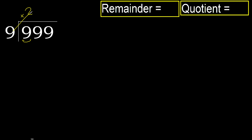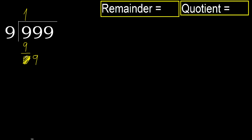9 multiplied by 2 is 18. 18 is greater. 9 multiplied by 1 is 9. It is not greater. 9 minus 9 is 0. Bring down 9.